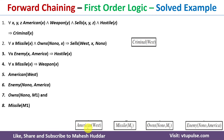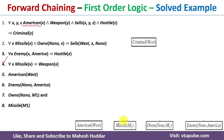We consider the first fact, American West, and check whether it is present on the premises side of any rule. Looking at the four rules, American X is present in the first rule, but there are additional conditions, so we cannot yet conclude X is a criminal. However, looking at the fact that M1 is a missile and the fourth rule — if X is a missile, then X is a weapon — we already know M1 is a missile, so we can conclude M1 is a weapon.